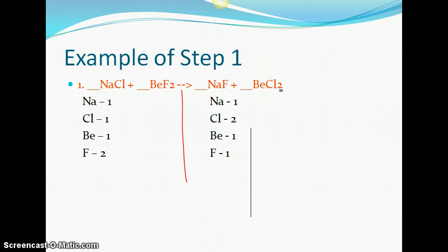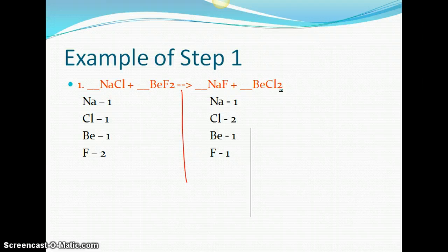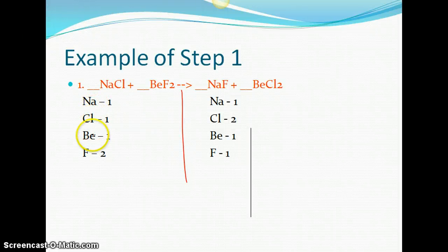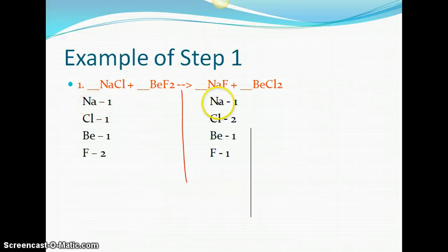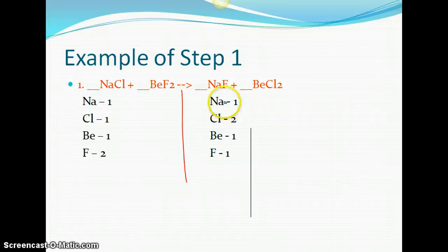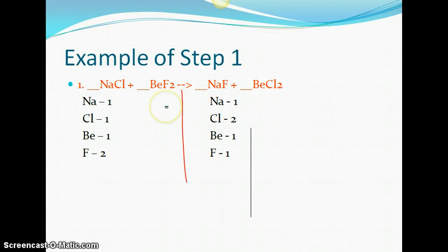The key part here is that we are writing these down, each element down on the left side. These are your reactant side. And each of the elements from your product side. Notice that if we have sodium on one side, we have to have sodium on the other side. We can't all of a sudden create some new element over here that wasn't on the reactant side. It has to be on both sides.